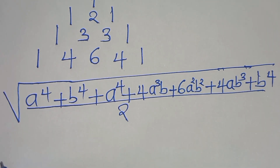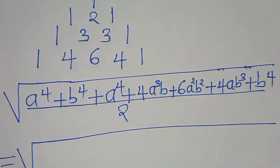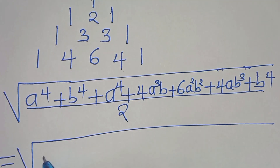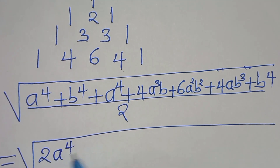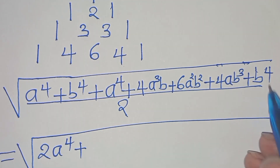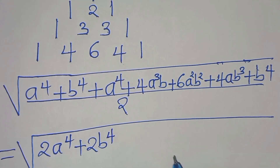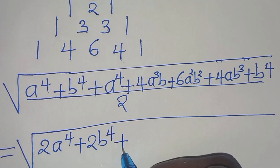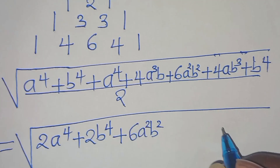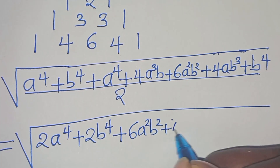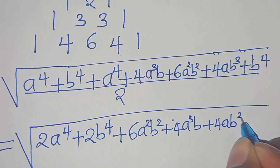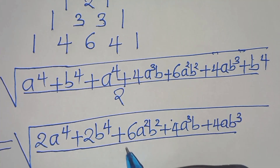The next step: we have the square root of — now we have a to the power of 4 here and a to the power of 4 from the expansion, so let's combine this to get 2a to the power of 4. Then we have b to the power of 4 and b to the power of 4, combining to get 2b to the power of 4, plus 6a to the power of 2 times b to the power of 2, plus 4a to the power of 3 — everything divided by 2.